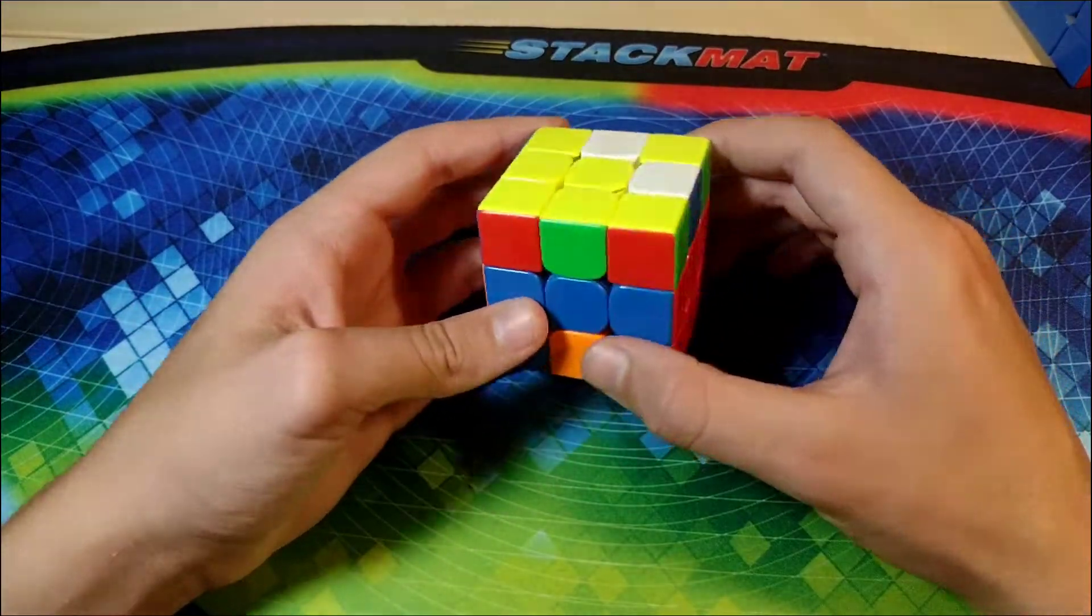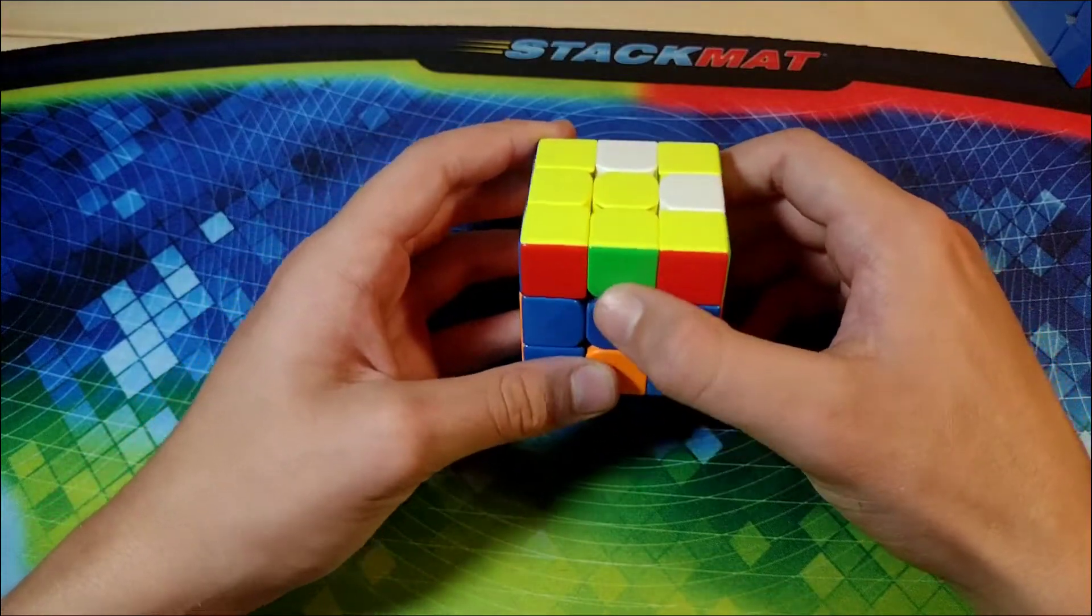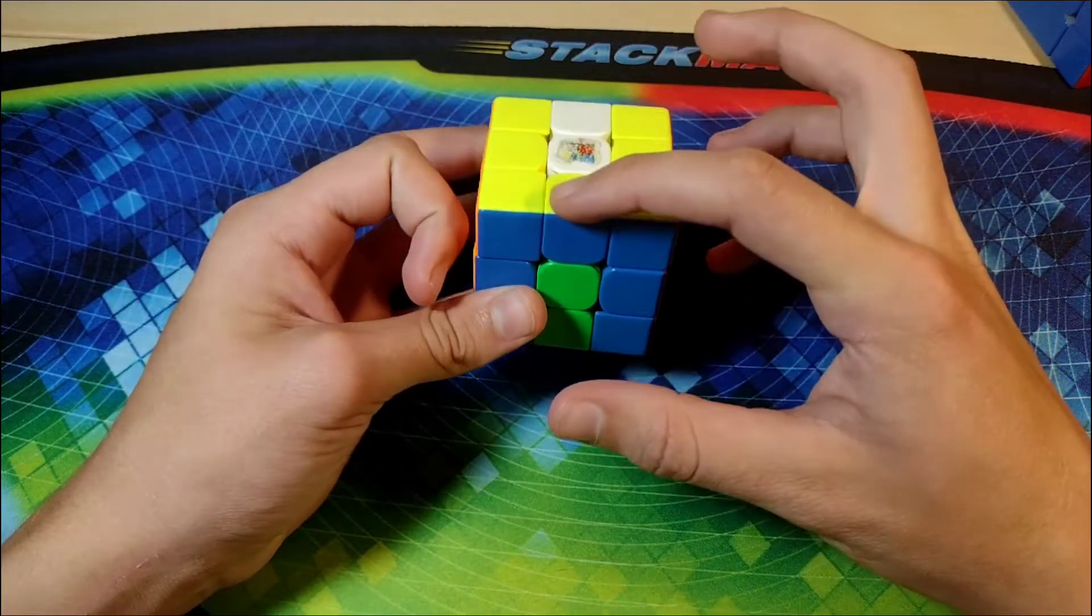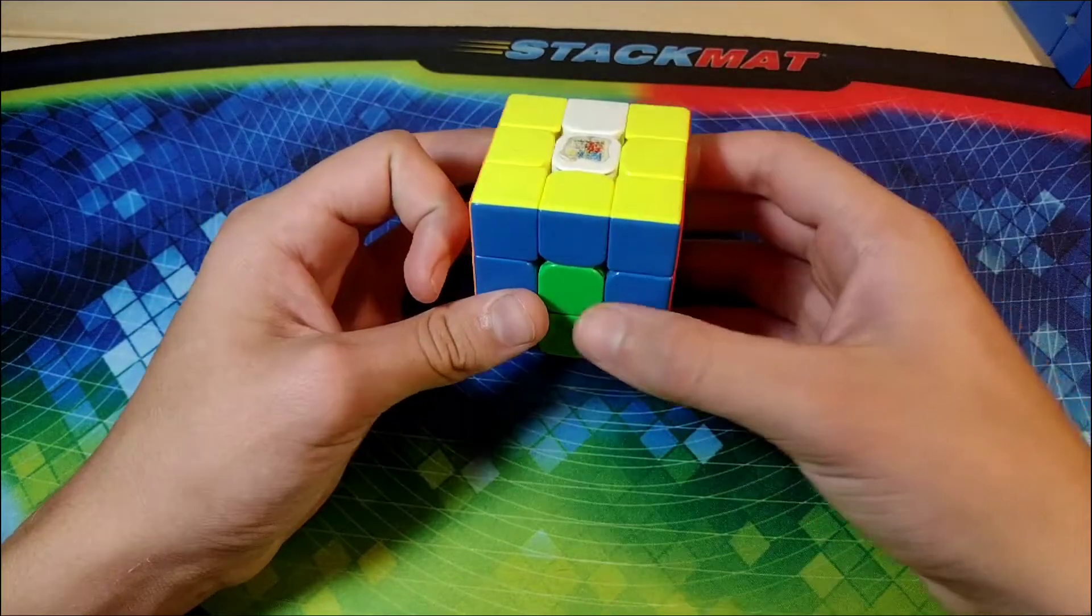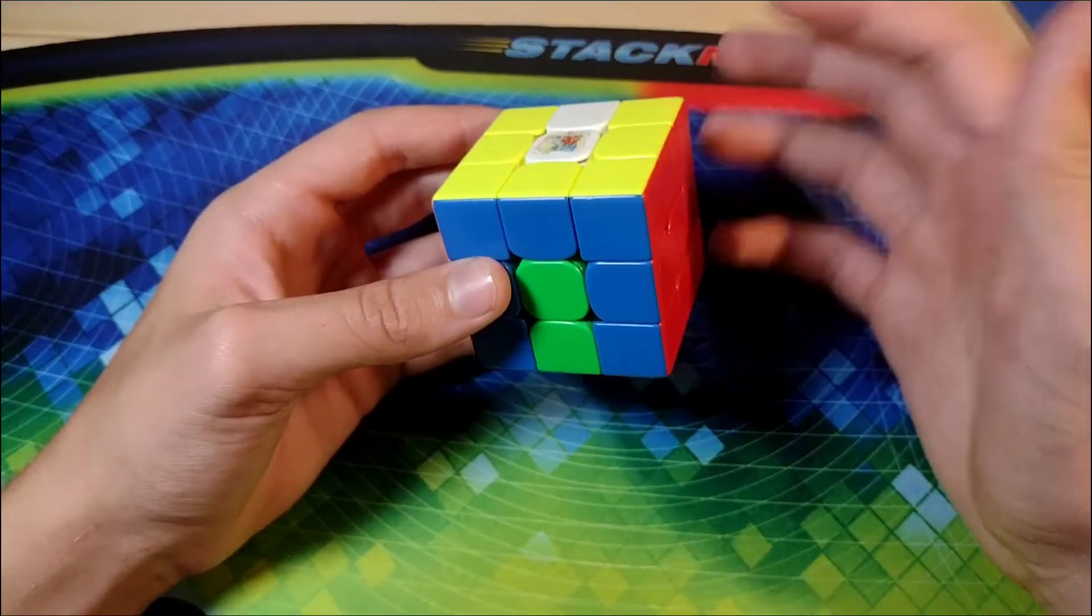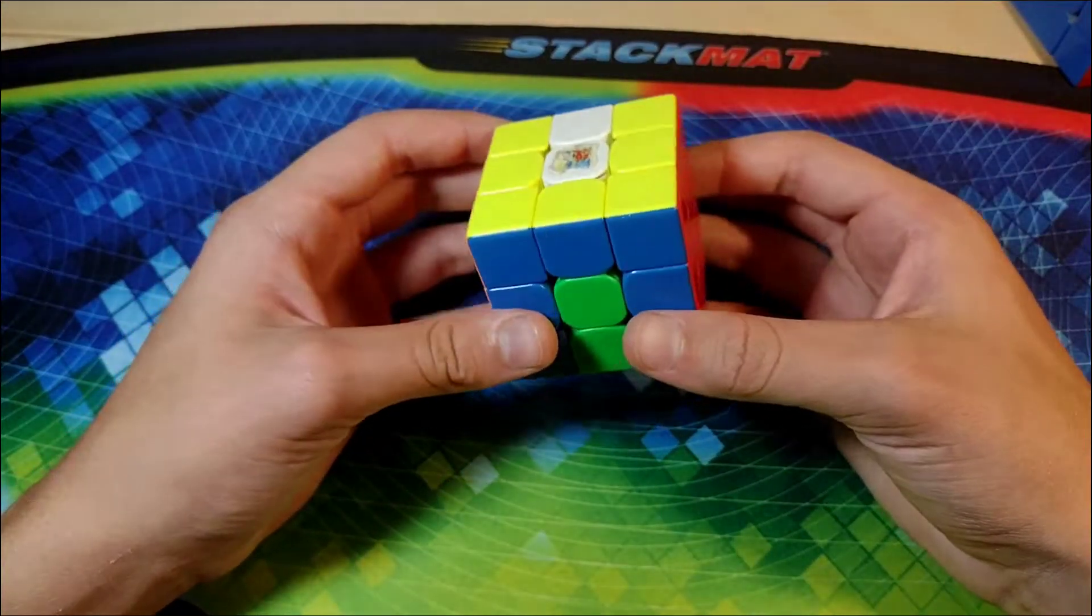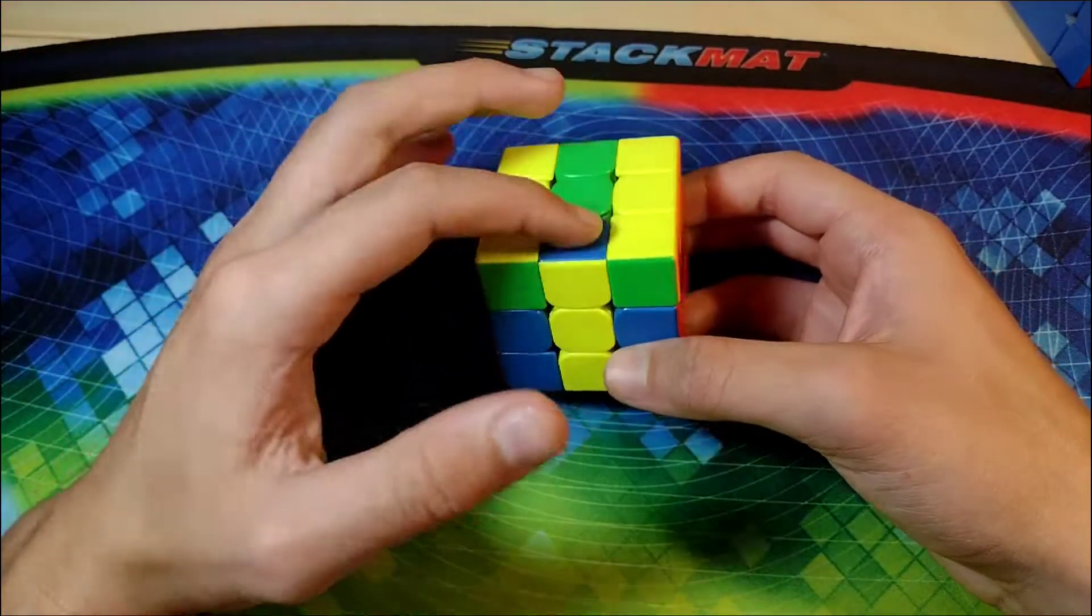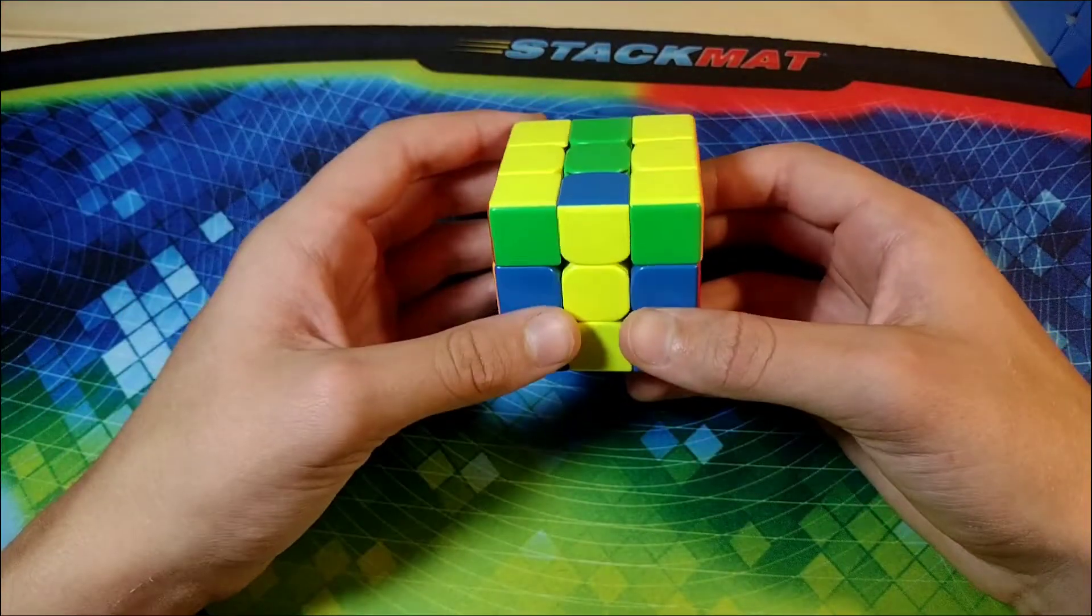And then here, we also have a non-matching centers case, right? That's not matching. And so we'll do an M2, and we'll align the corners. But this time, it came to the front. And so if it comes to the front, then you're going to raise the dot immediately without doing the M2 and the U2 beforehand. So here, we'll raise the dot. And in this case, we actually have to raise the dot a second time.